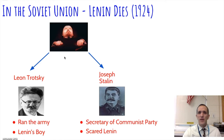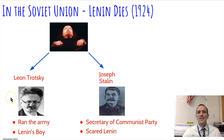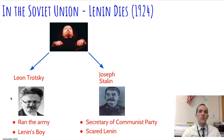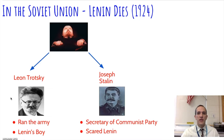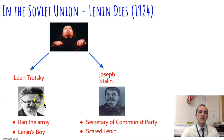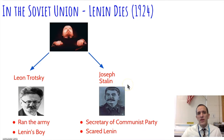When Lenin died, there were really two options for successor. One was Leon Trotsky, kind of Lenin's top guy, who had led the military during the revolution and the civil war that followed between the communists and non-communists. The other option was Joseph Stalin. Despite Lenin's warning, Stalin would ultimately win the struggle for power.